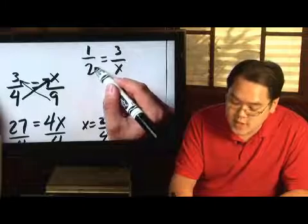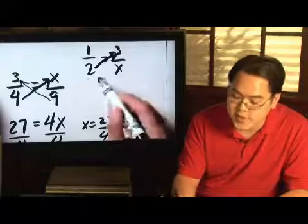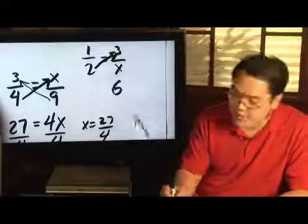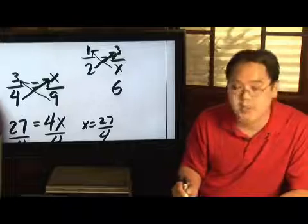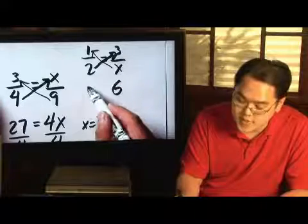Take the denominator, multiply it by the numerator on the other side, 2 times 3 is 6. And then take this denominator, multiply it by the numerator on the other side, x times 1 is equal to x.